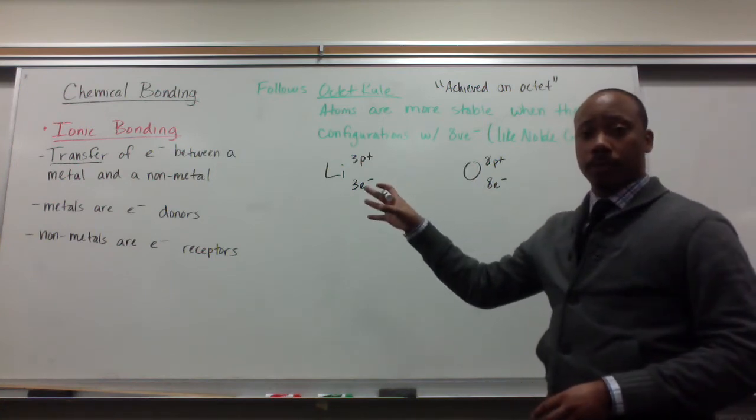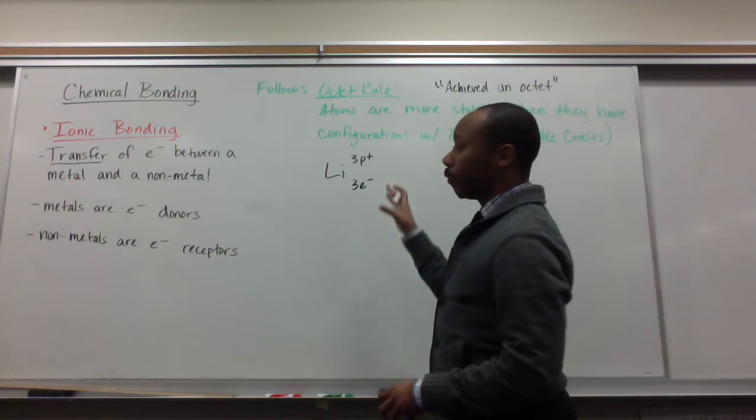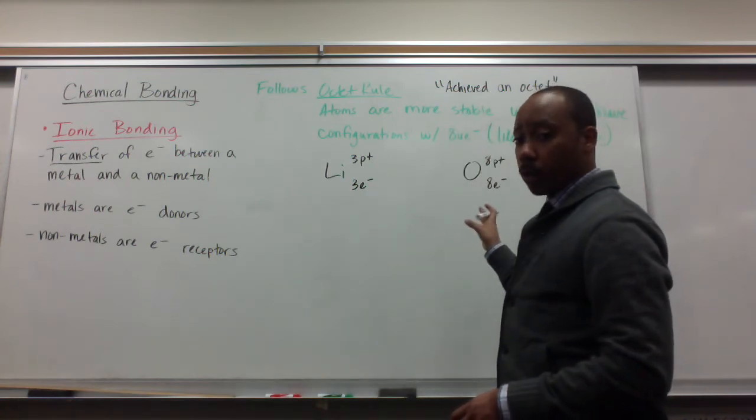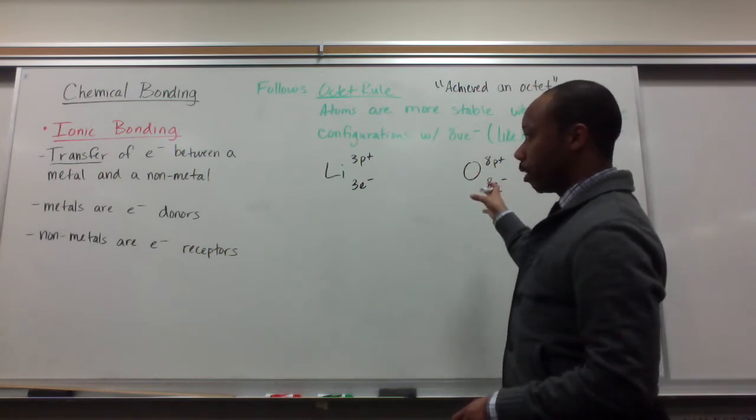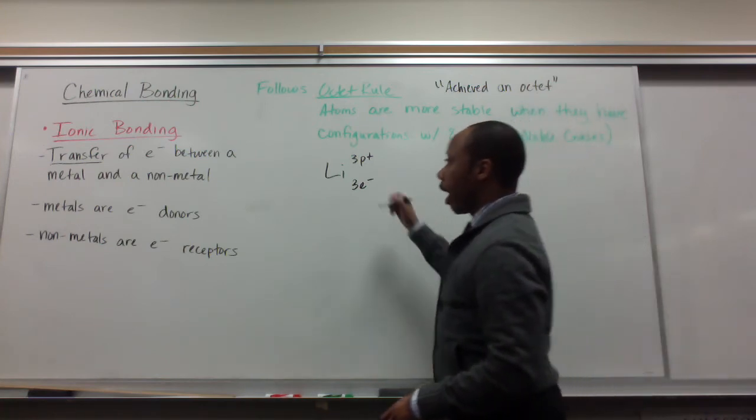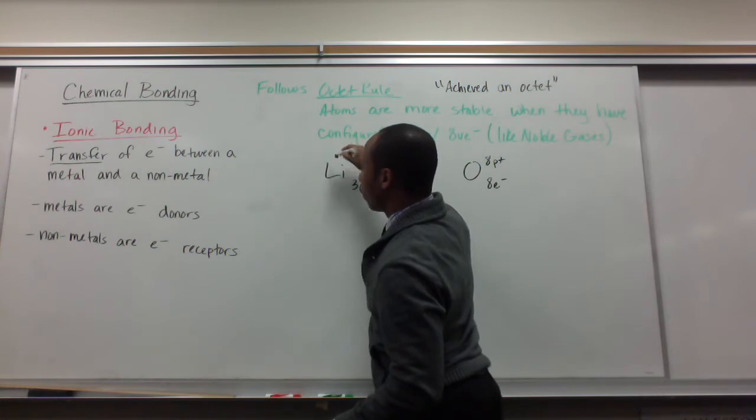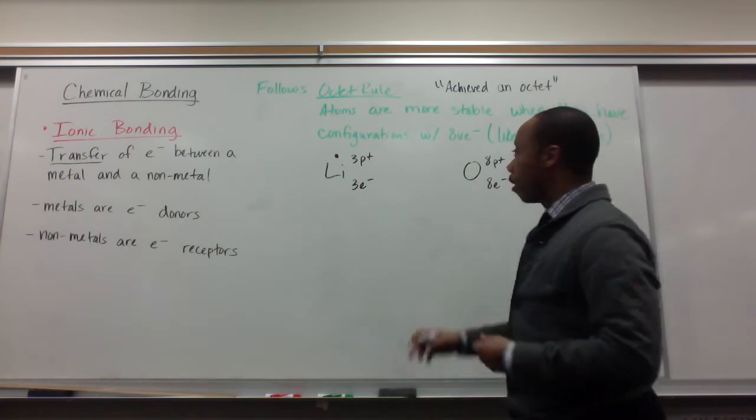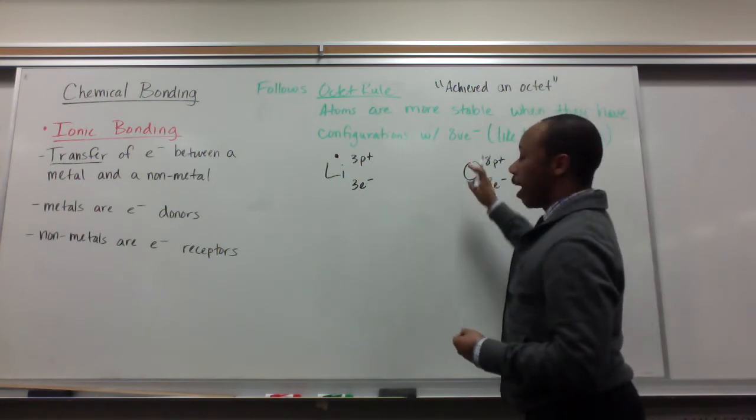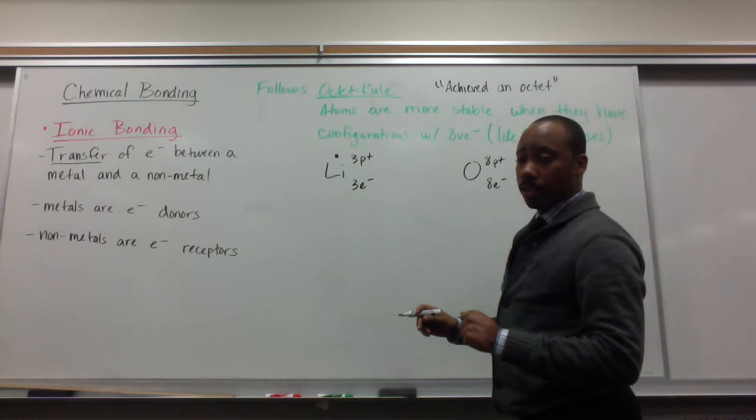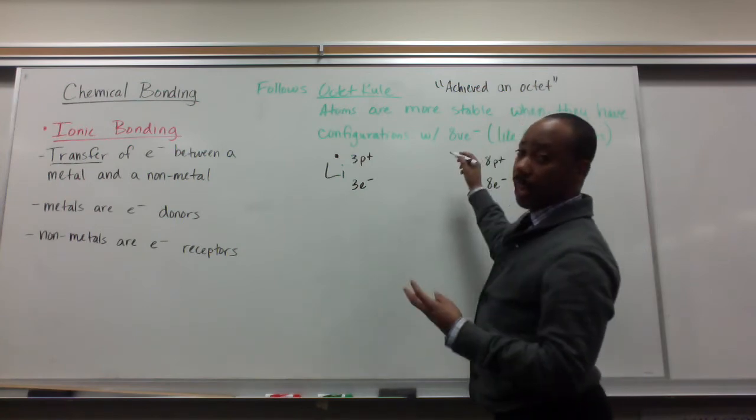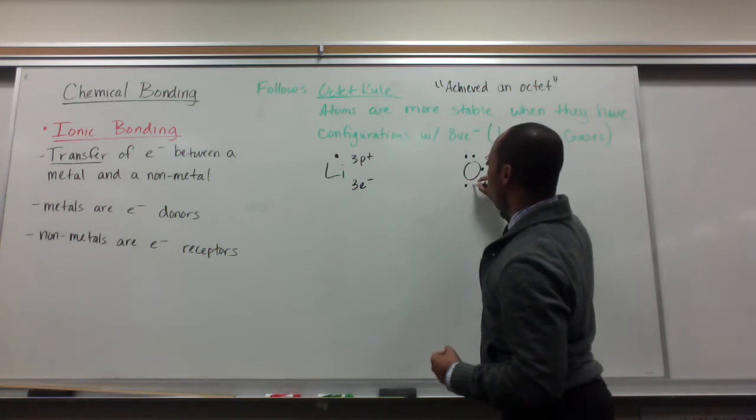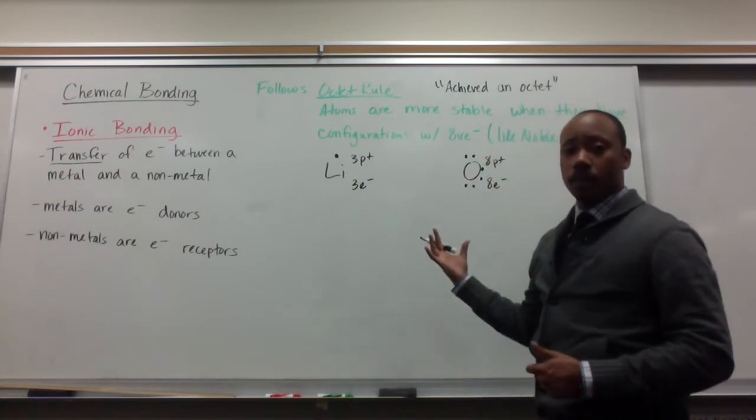In order to bond ionically, there has to be a transfer of electrons. My metal will transfer its valence electrons to the nonmetal, and the nonmetal will receive them—donor and receptor. Lithium has one valence electron, so Li with this little dot here is my electron dot structure for lithium. Oxygen has six valence electrons because it's in group 6A, so I draw those: one, two, three, four, five, six. That is for oxygen.